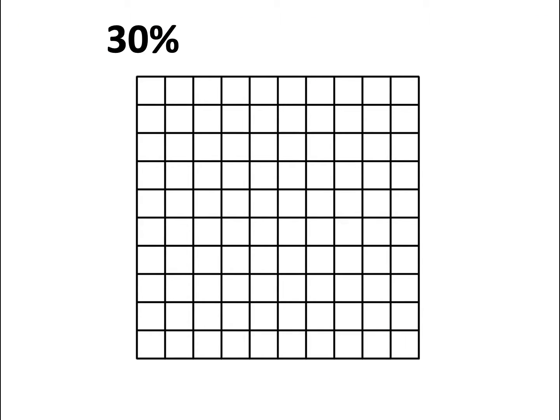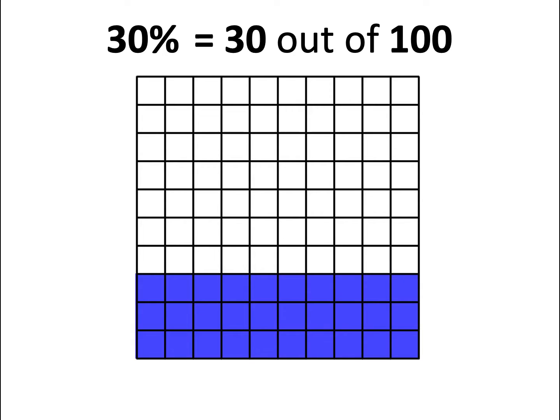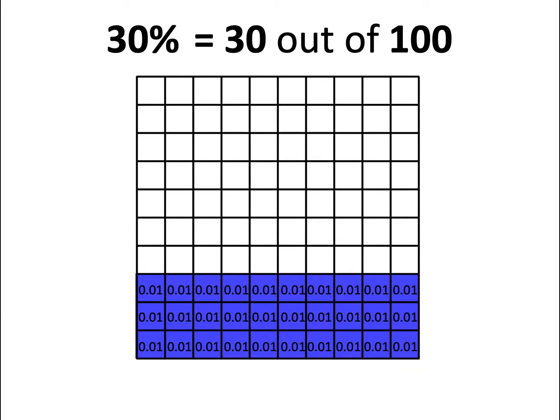With that understanding, let's try and figure out what 30% is as a decimal. We know 30% is 30 out of 100, and we know each part out of 100 is equal to 0.01. So 30% would equal 30 lots of 0.01. This is equal to 0.3.